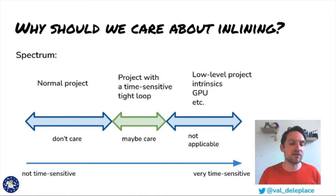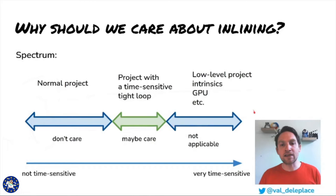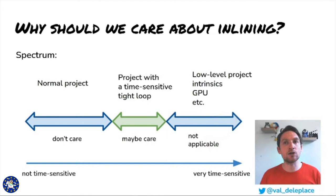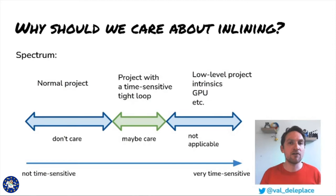At one end of the performance spectrum on the left, many business apps don't require high performance. At the other end of the spectrum on the right, some very high performance concerns require more advanced techniques than inlining, and not all of them can actually be implemented in Go. There are also projects that would really benefit from performance optimizations, but not from inlining — rather from optimizations of very expensive operations like network requests, file system I/O, and memory allocations.